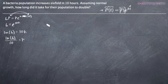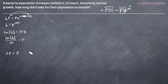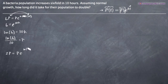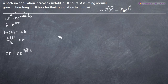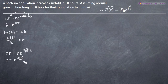Now that we've found k, the problem asks us how long it takes for the population to double. When the population doubles, we know that p of t is going to equal 2p, where p is the original population. So we plug that in: 2p equals p times e to the quantity natural log of six divided by ten, times t. We can divide through by p and we get 2 equals e to the natural log of six divided by ten, times t.